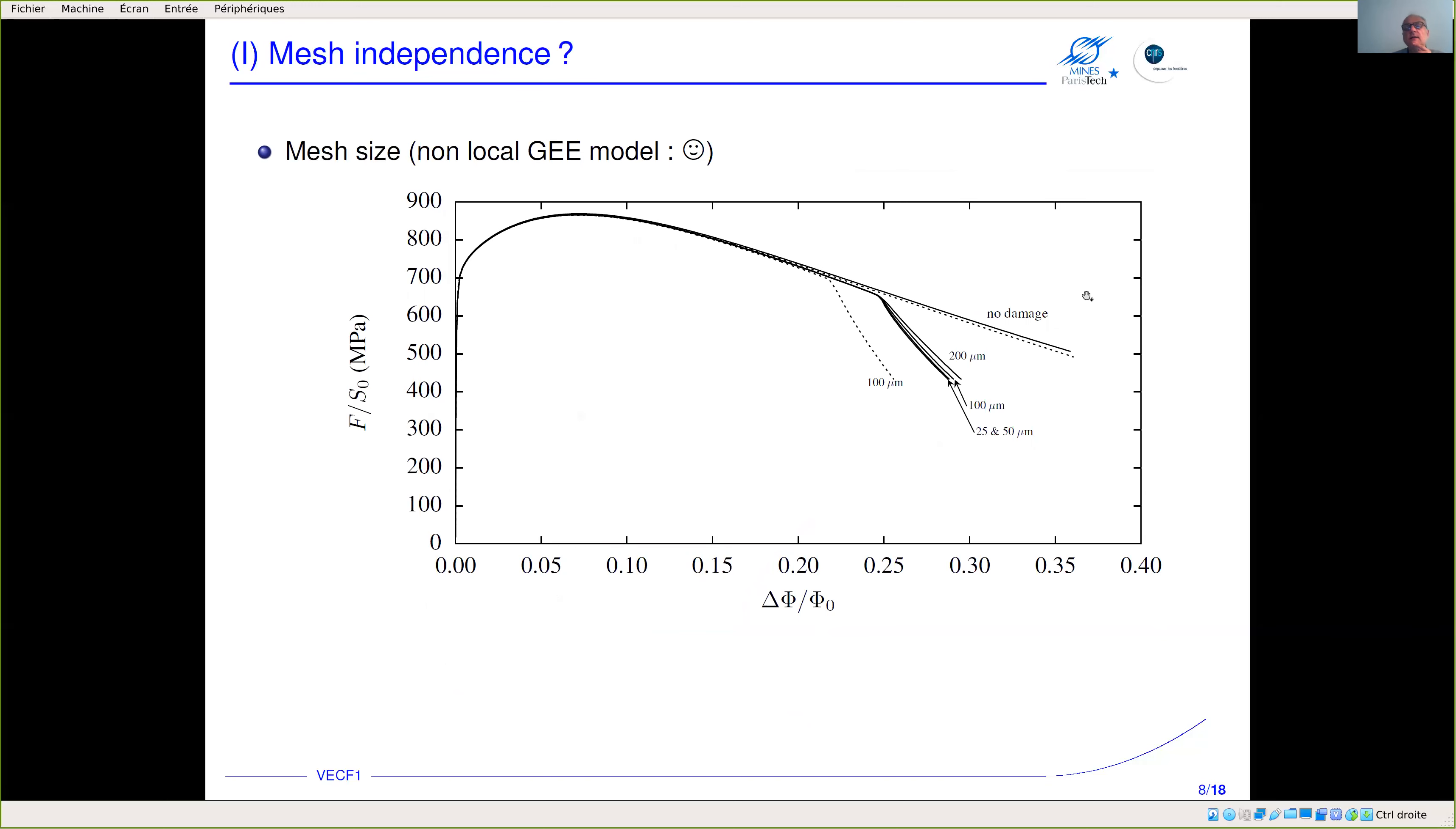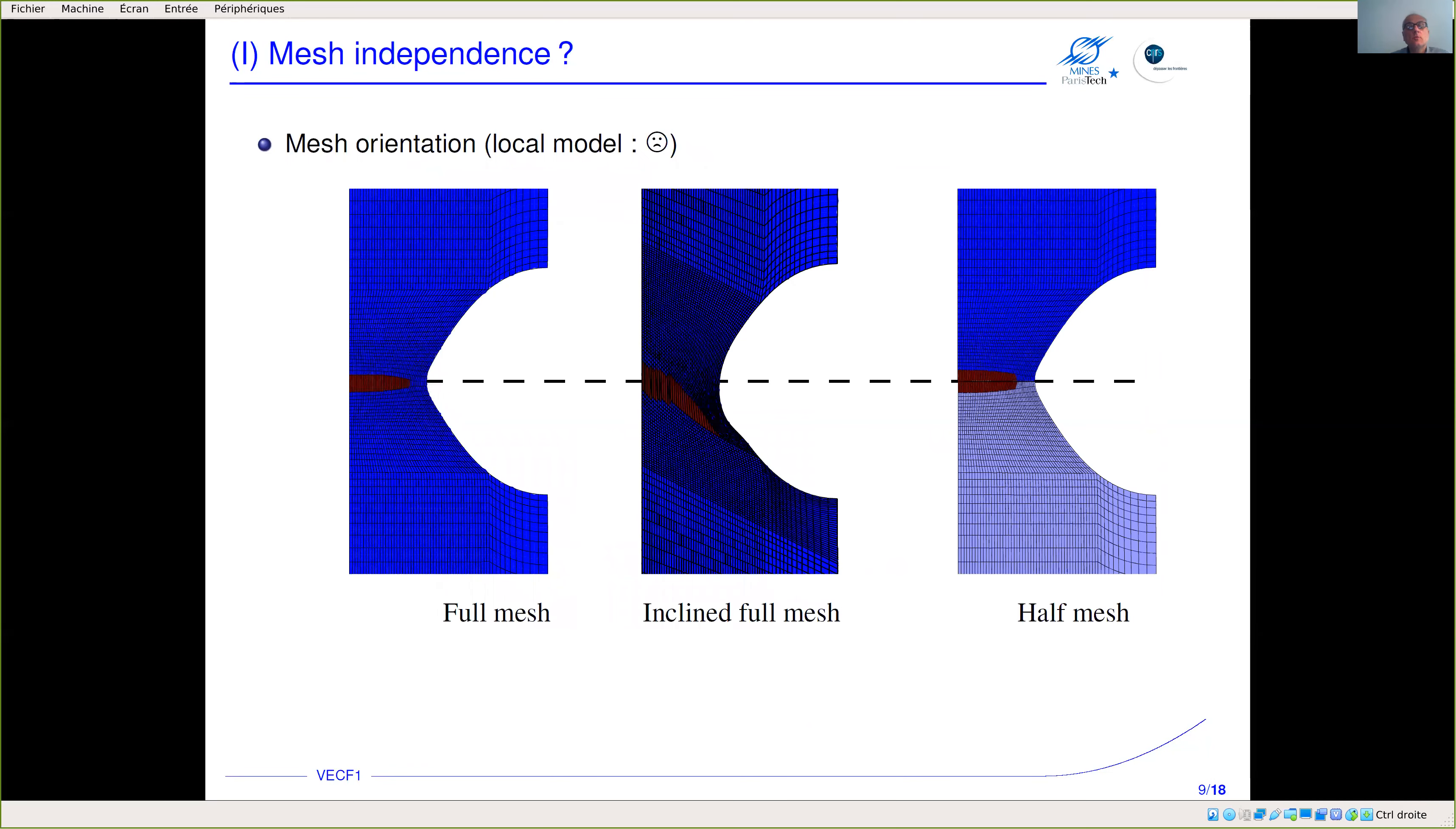When we use the model we get that kind of result. The force versus diameter variation in the minimum cross section—thick line is no damage, dashed line is the standard local model. Here we use mesh sizes from 200 microns down to 25 microns and you see there is a nice convergence as soon as we reach something like 100 microns.